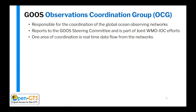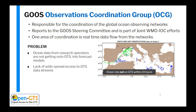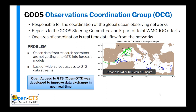A little background: the GOOS Observations Coordination Group is responsible for the coordination of the global ocean networks, and it's part of the joint WMO-IOC efforts. One area that the OCG looks to coordinate is data in real time, and so several years ago we were approached with a problem — there was known to be data that was being collected but that this data was not making it to the operational models in near real time. From that question is where the OpenGTS was developed, really to improve data exchange in near real time.